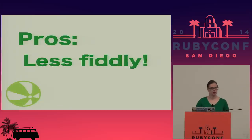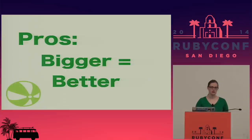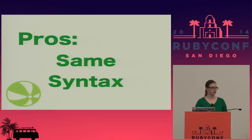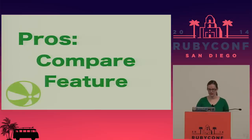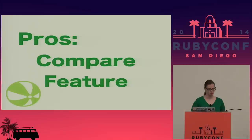What are some pros of benchmark-ips? It's a lot less fiddly than the built-in Benchmark. Because it's measuring iterations per second, bigger numbers are better — the more iterations per second, the faster and more performant your code is, making it easier for our brains to compare results. It also has nearly the same syntax as the built-in Benchmark, so it's really easy to switch over. And it has the really cool compare feature, so you don't have to do the math yourself — let the computer do it.